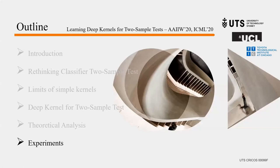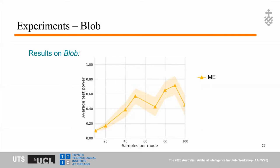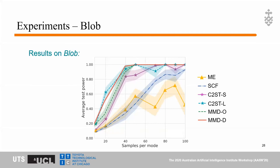In experiments, we first consider the blob dataset. Baselines include the mean embedding test, the ICF test — tests from before deep kernel MMD — C2ST-S and C2ST-L as introduced earlier, and MMD-O, which optimizes only the bandwidth of the Gaussian kernel without a deep kernel. Our proposal, MMD-D, outperforms most baselines and achieves comparable results with C2ST-L on the blob dataset.